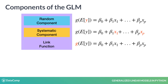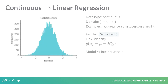Let's review the most common data types and how they are represented in the GLM framework. One data type we are all very familiar with is continuous and approximately normally distributed, with the real line as the domain. Some examples are house prices, level of salary, person's height, etc. When fitting a GLM, we would use Gaussian for the distribution family, where the link function is the identity.